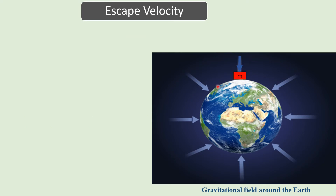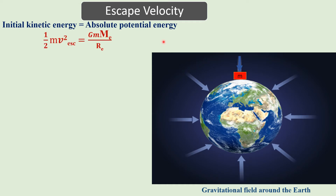The initial velocity provided to a projectile to move it from earth's surface to infinite distance equals the absolute potential energy condition. Setting initial kinetic energy ½mv_escape² equal to G·m·M_e / R_e, we cancel m from both sides and rearrange. Taking the square root, we get: escape velocity = √(2·G·M_e / R_e). This is the formula for escape velocity for earth.